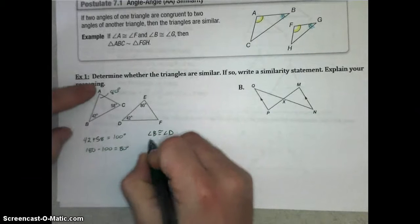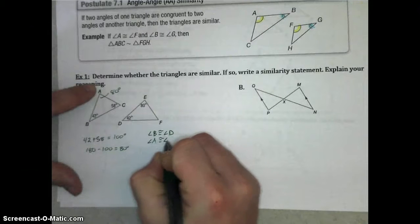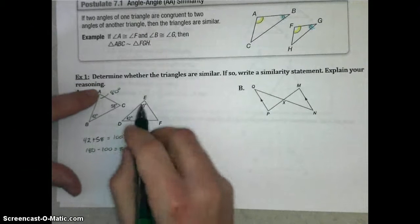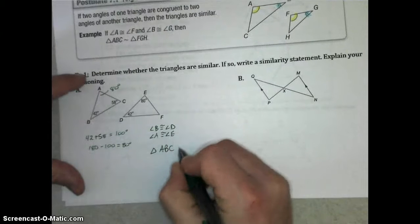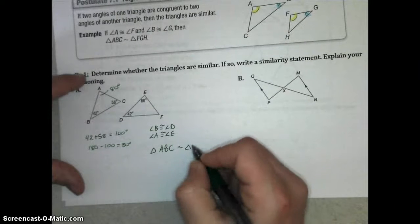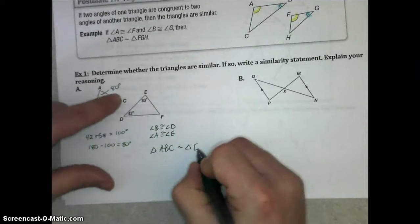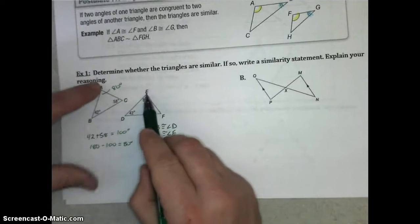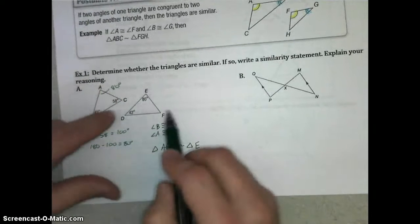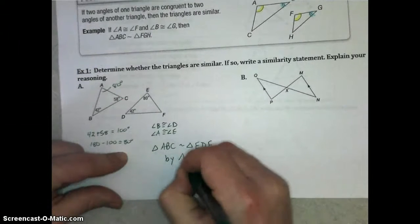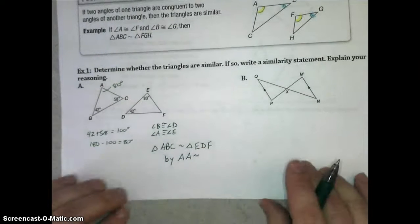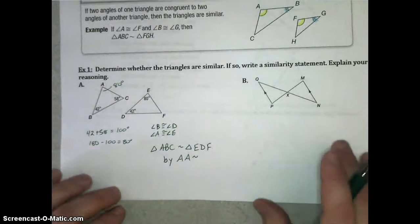That angle is congruent to angle E. Since angle B and D are congruent, and angle A and angle E are congruent, both measuring 80 degrees, triangle ABC is similar to triangle EDF by angle-angle similarity.